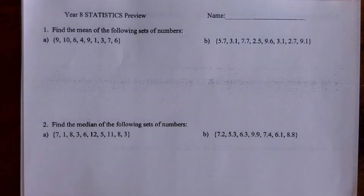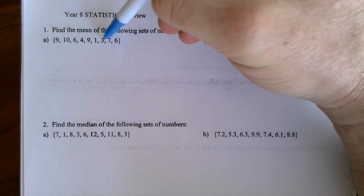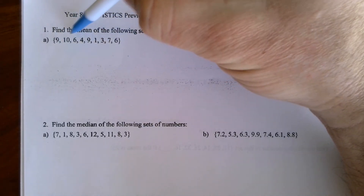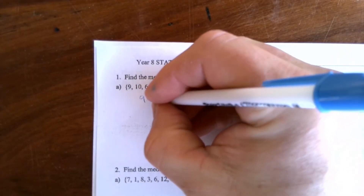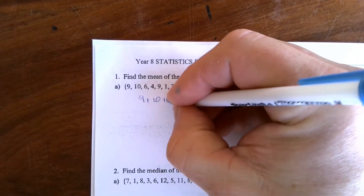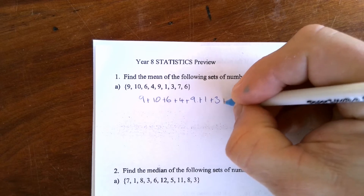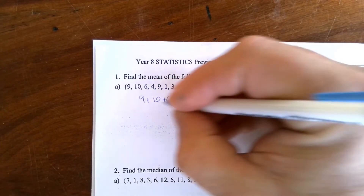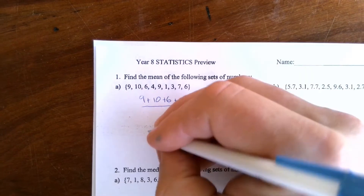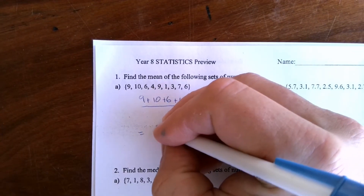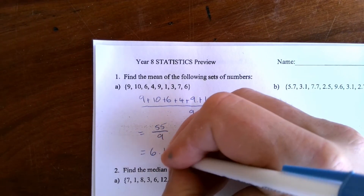Question 1a asks us to find the mean, or average. To do that we add the numbers together and divide by how many scores we have. So 9 + 10 + 6 + 4 + 9 + 1 + 3 + 7 + 6, all divided by 9 scores, equals 55 ÷ 9, which is 6.1.